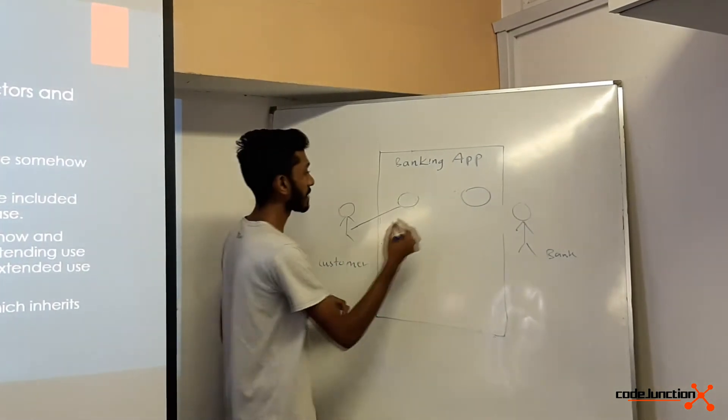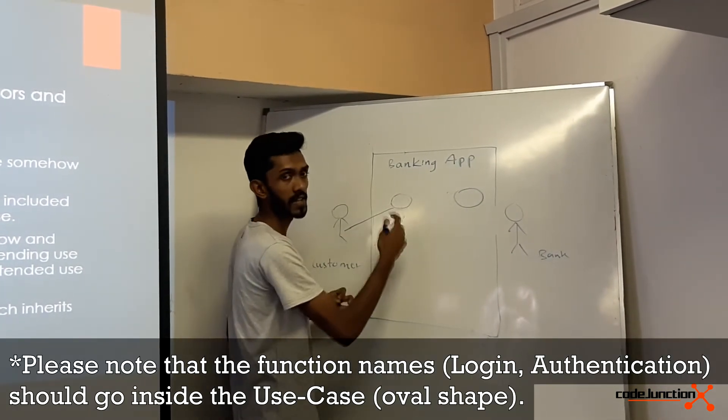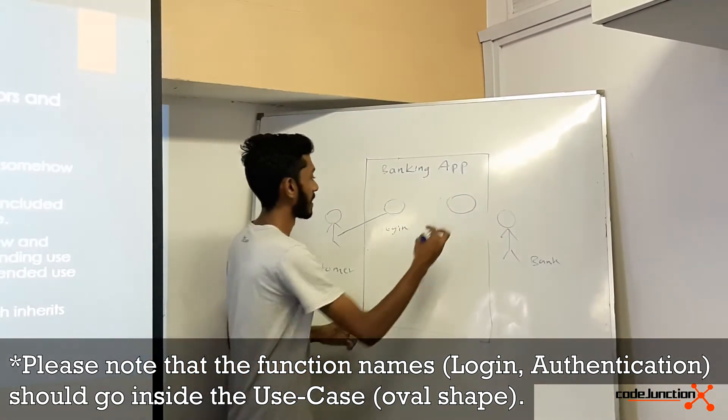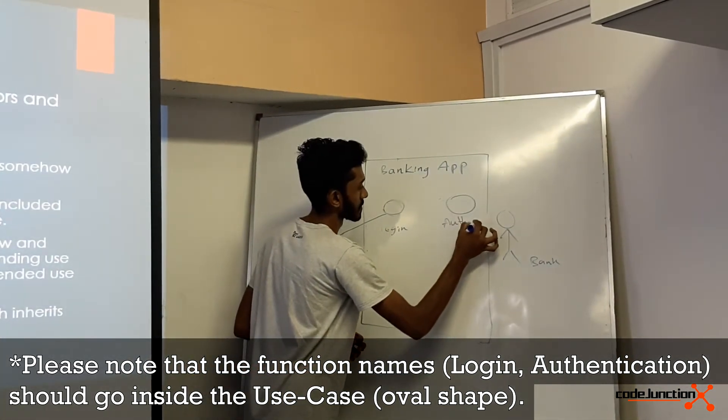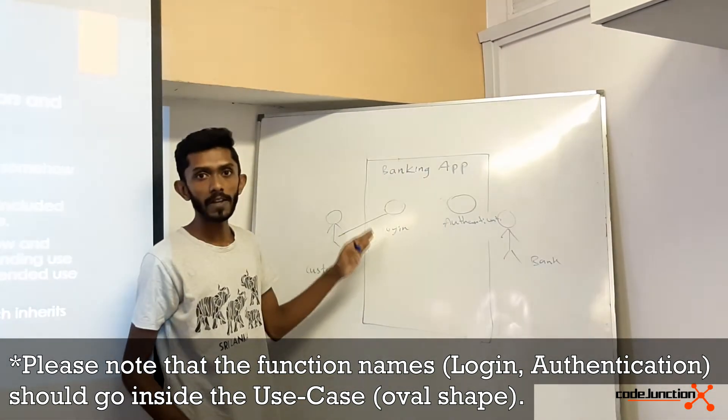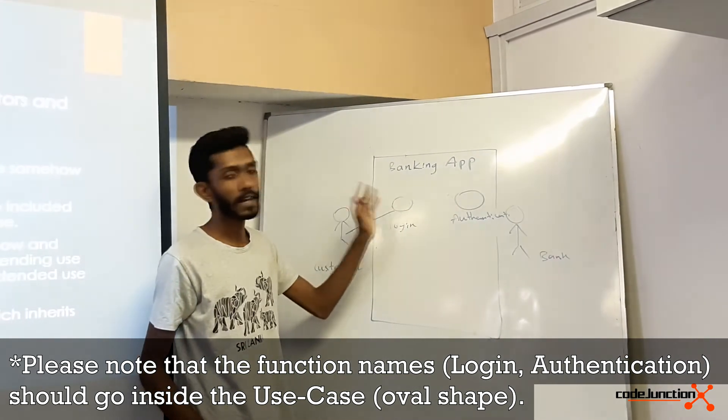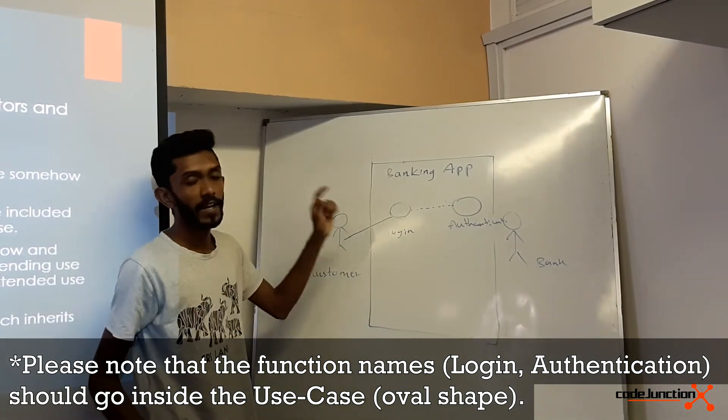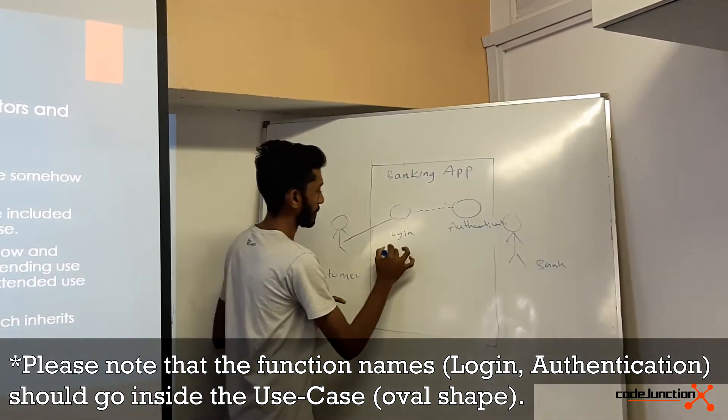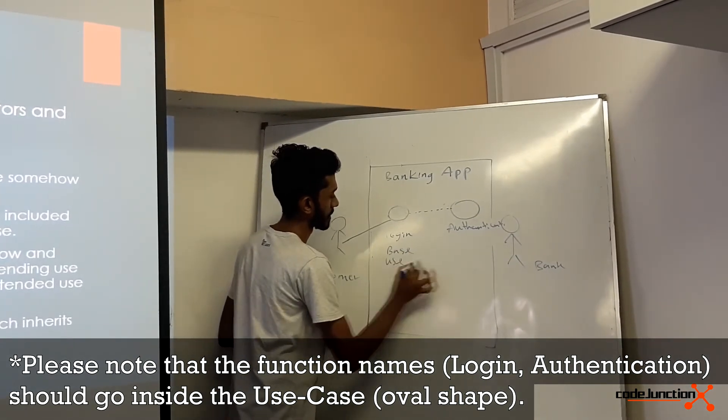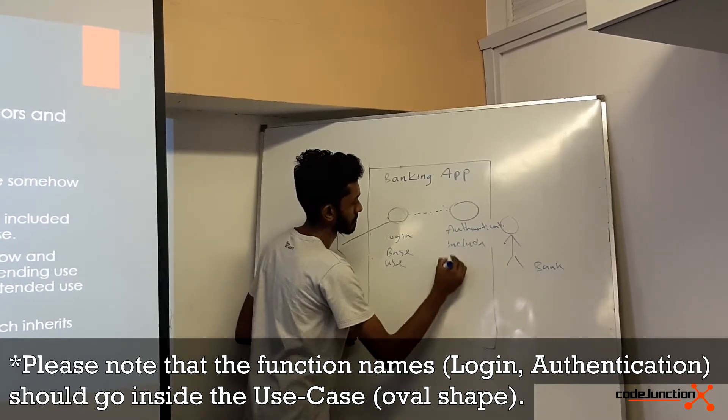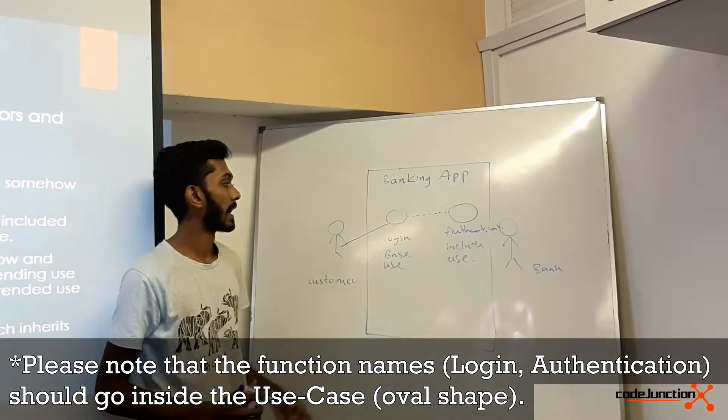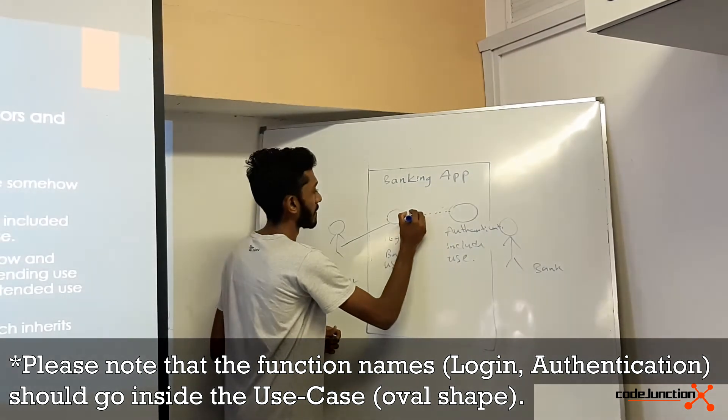When it comes to include relationship, you have to complete both use cases to complete the action. Let's assume that customers need to login to the bank app. The base use case is login, and the include use case is authentication. So if the user needs to login to the banking system, you have to correctly input the username and password. In the include relationship, both the base and include use cases should be complete, and we are showing it like this.